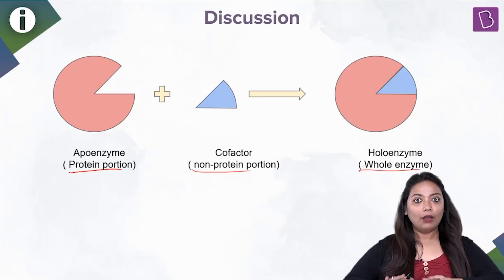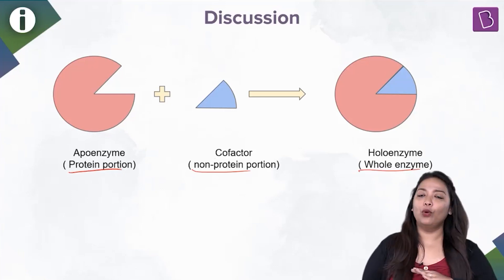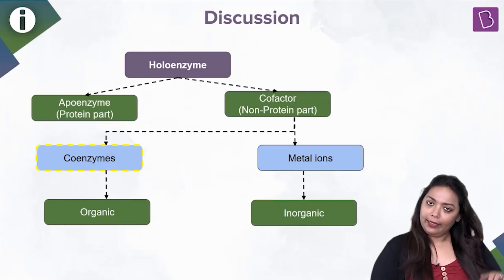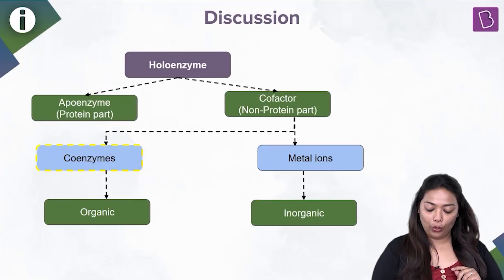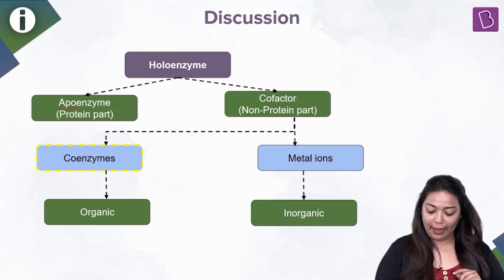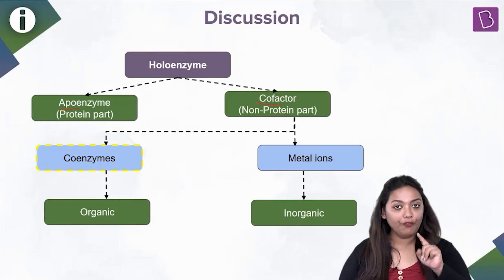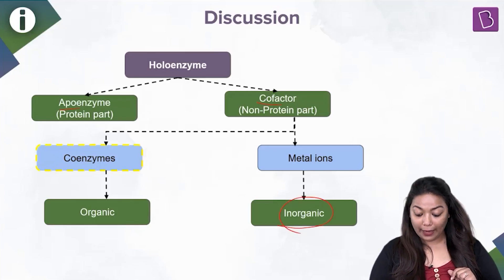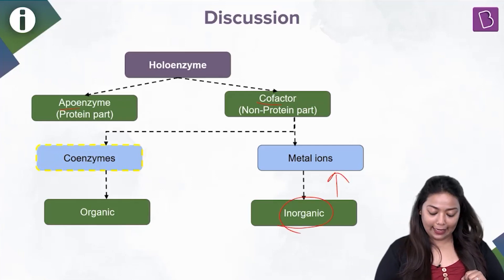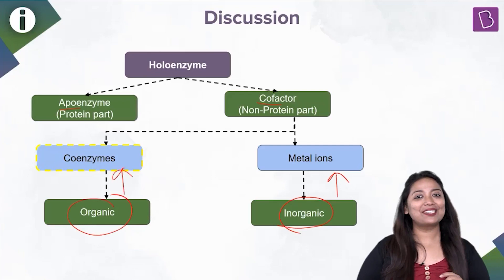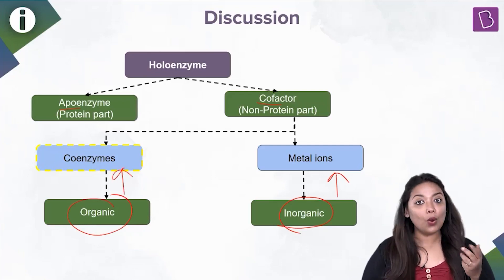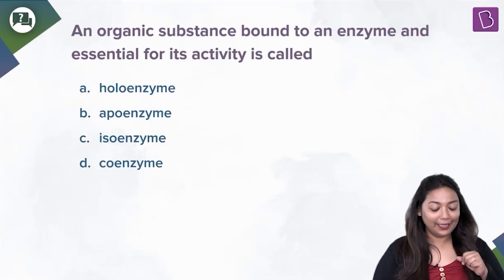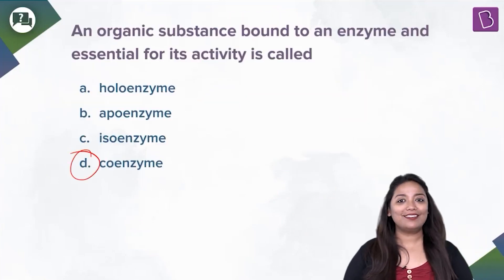Let's put them in a flowchart for a good visual memory. The holoenzyme has an apoenzyme and a cofactor. The cofactor can either be inorganic like metal ions, or organic like coenzymes. So the organic part is the coenzyme — that's Option D, the correct answer here.